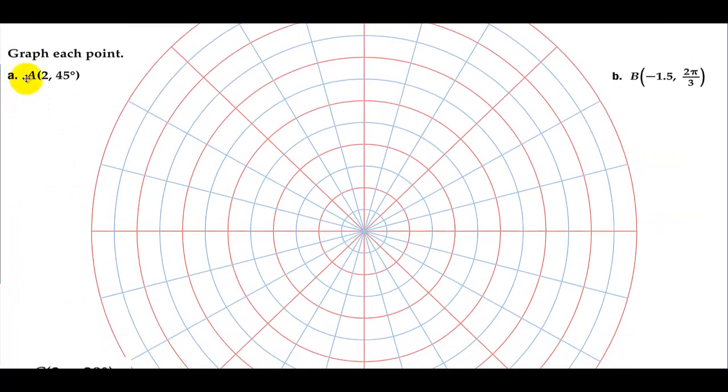Graph each point. Letter A is 2 units from the pole at 45 degrees. So we go to 45 degrees, or π/4, and then go 2 units from the pole. So there is point A.